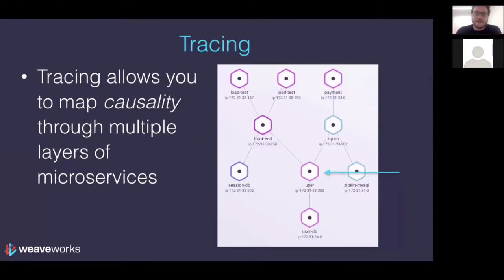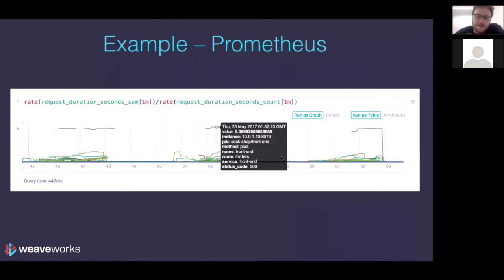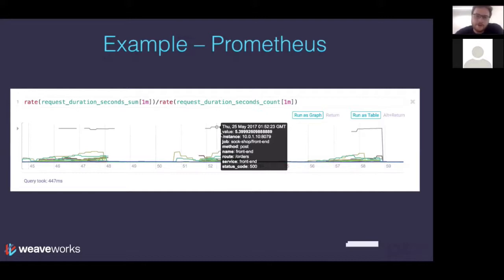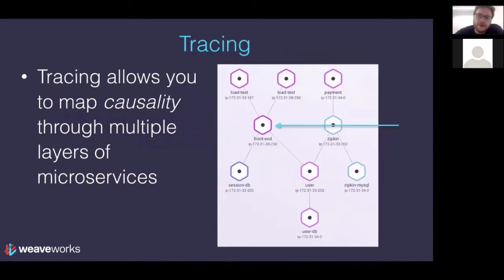Now tracing — these are all different ways of slicing the observability of your system. With Prometheus you get a graph showing time on the X axis and your PromQL value on the Y axis, but this doesn't show you the relationship between different components. For example, you can see that the front end took five seconds to respond, but it doesn't show you where exactly that time was spent servicing the request. Tracing answers the question of where time was spent during a distributed request — it's known as distributed tracing. Another way to think about it: tracing allows you to map causality through multiple layers of microservices.